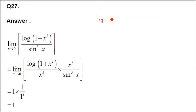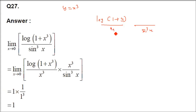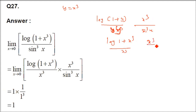Question 27: limit x→0 of log(1+x³)/sin³x. Write as [log(1+x³)/x³] · [x³/sin³x] = [log(1+x³)/x³] · [x/sin x]³. As x→0, log(1+y)/y → 1 (with y=x³→0) and (x/sin x)³ → 1. So the answer is 1·1 = 1.